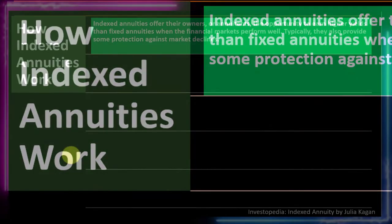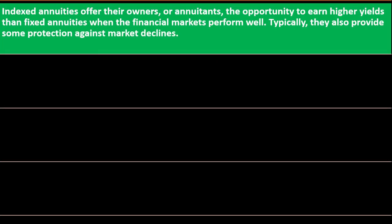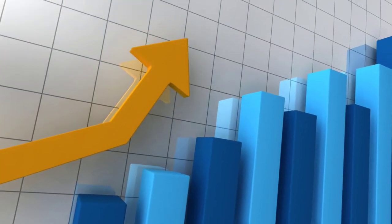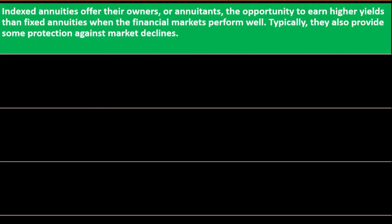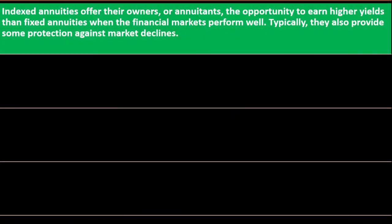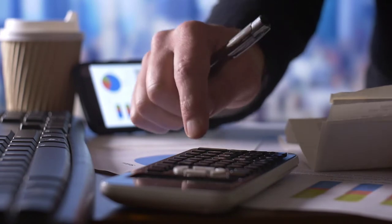How indexed annuities work: indexed annuities offer their owners the opportunity to earn higher yields than fixed annuities when financial markets perform well. However, you want to consider this in alignment with your overall investment strategy. You might be setting up the annuity to have a very dependable cash flow stream in the future. Fixed annuities are quite dependable because everything is laid out up front, but more market exposure means more risk and lower dependability, alongside higher potential for gain.